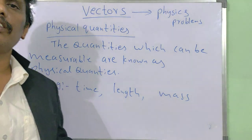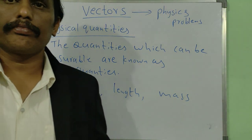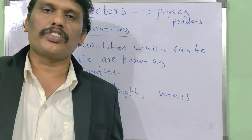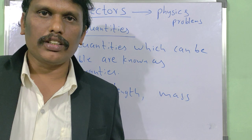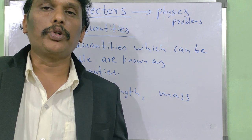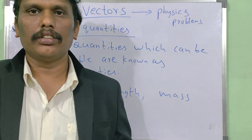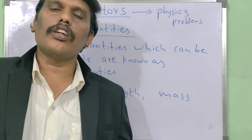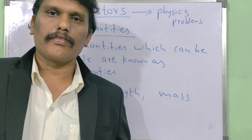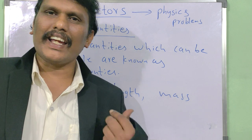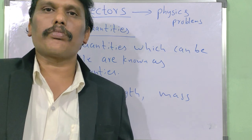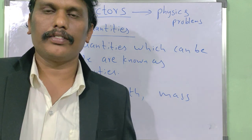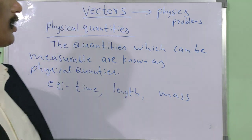Is there any quantity that is not possible to measure? Yes. For example, sadness, beautiness, handsomeness, cuteness — these are not possible to measure. Laughing, crying — these quantities are also not possible to measure. Those quantities are not physical quantities, remember that.